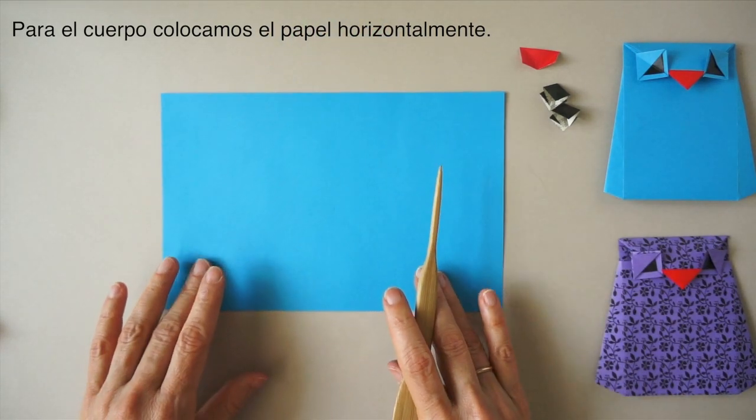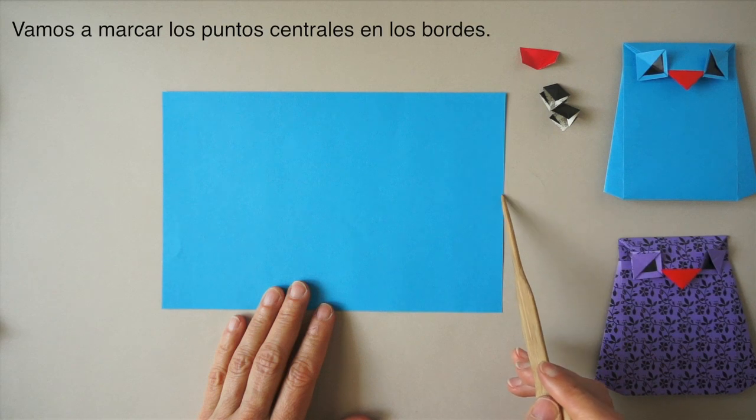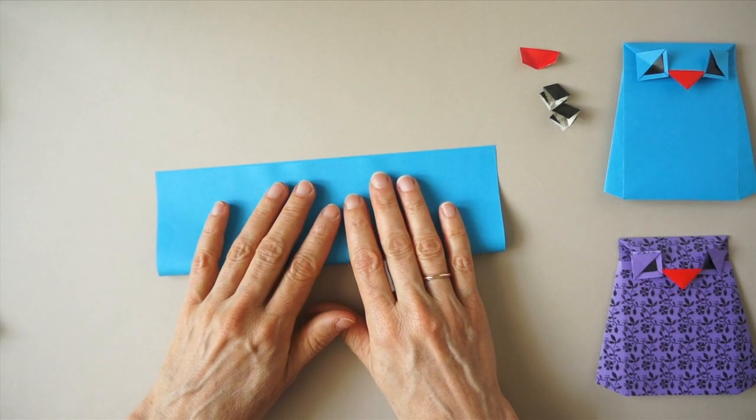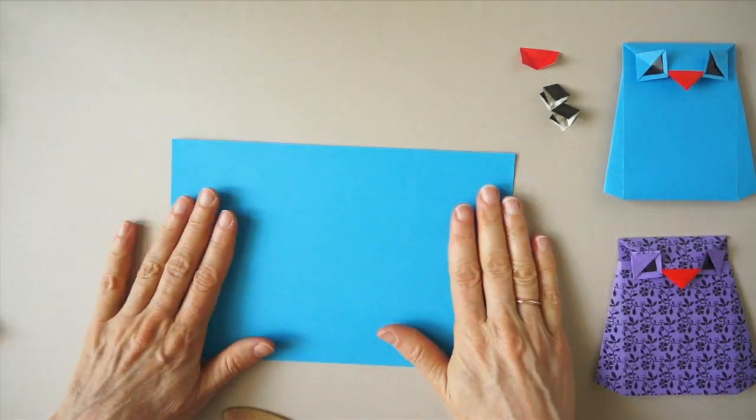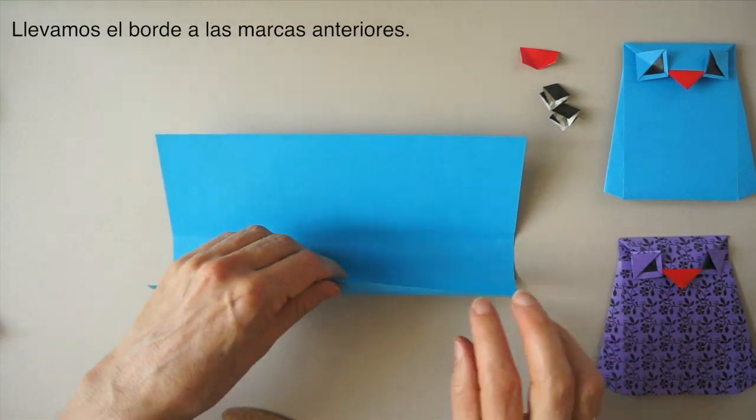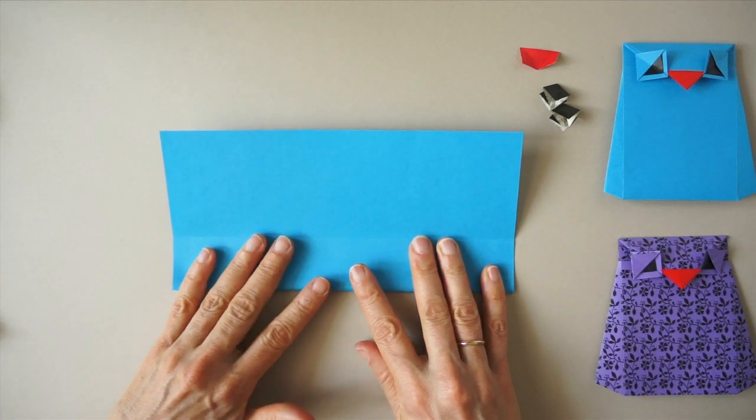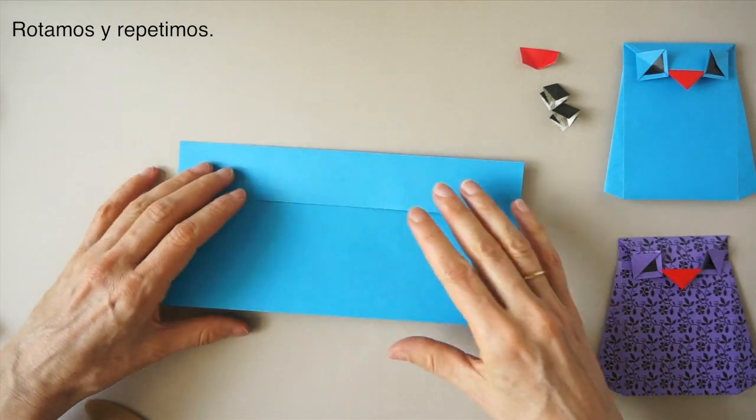For the body, we begin by turning the paper so that it is horizontal. We are going to mark the centers here. Now we bring the edge to that pinch mark.